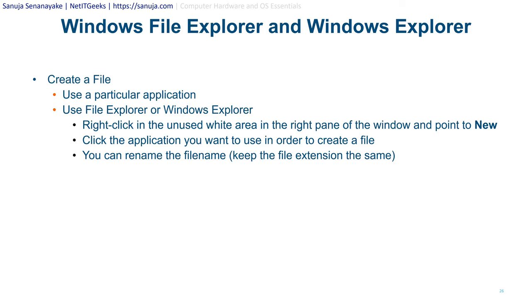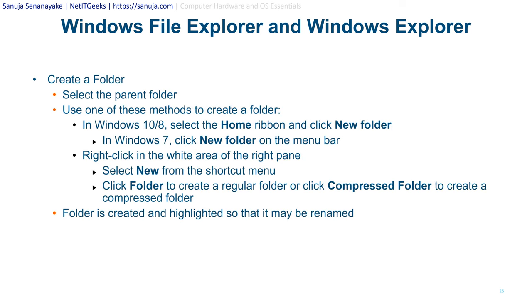You can also use File Explorer or Windows Explorer to create a file: right-click in the unused space inside a folder, then from the right pane select New and click the application you want to use to create that file. You can rename the file by changing the file name while keeping the same extension to make sure it opens the correct application.